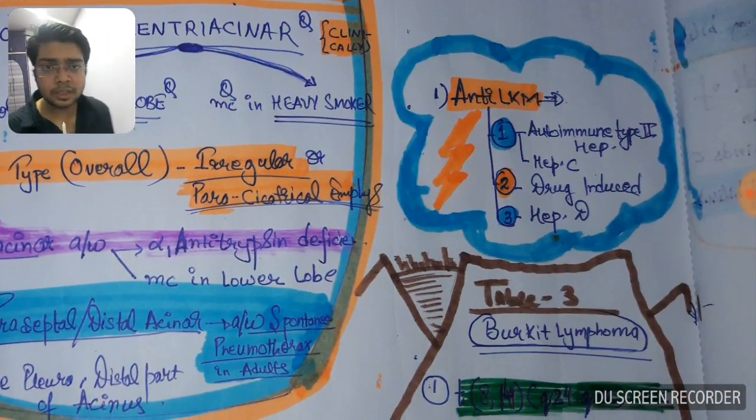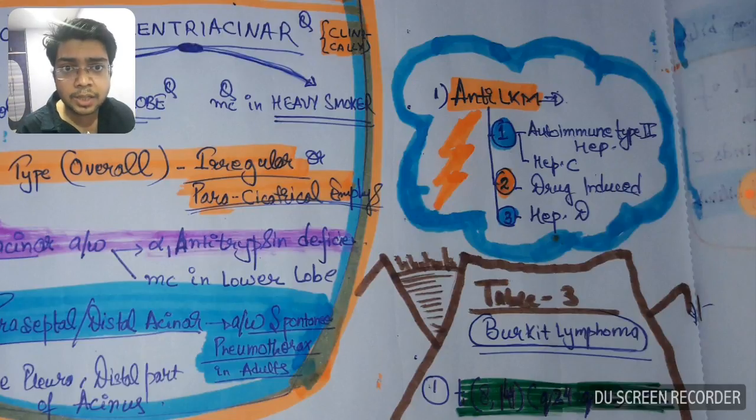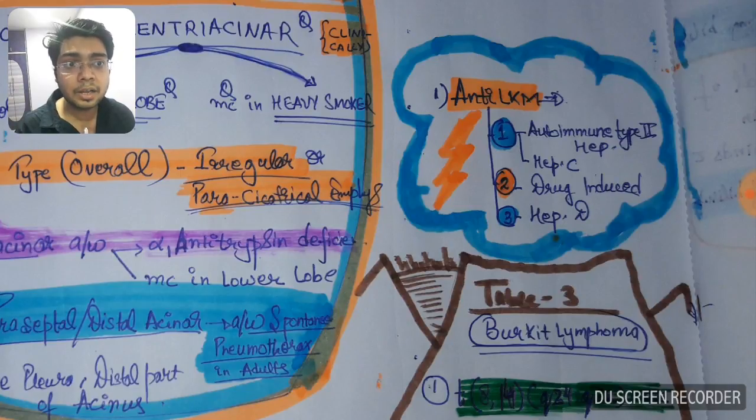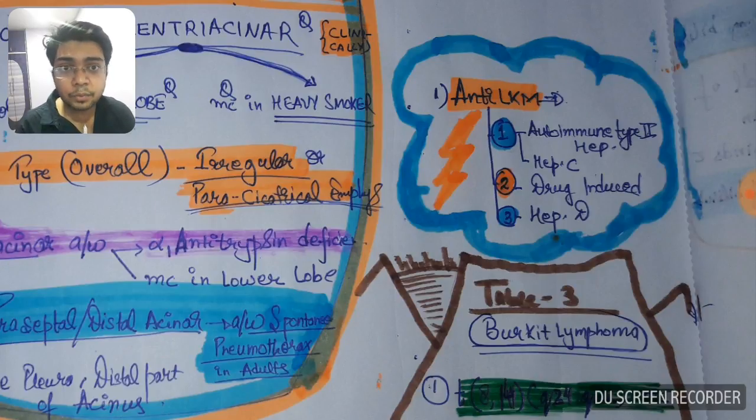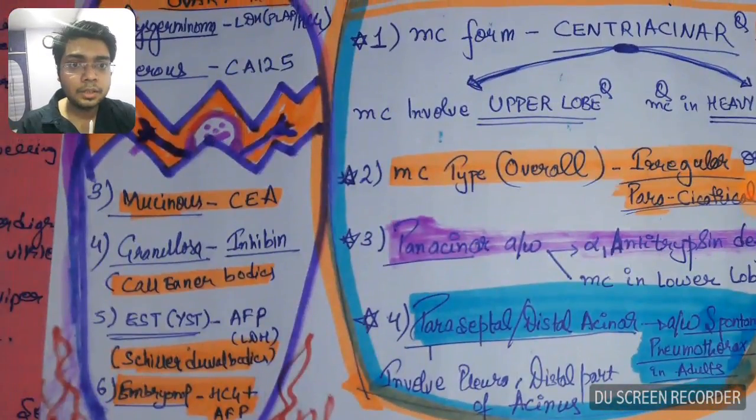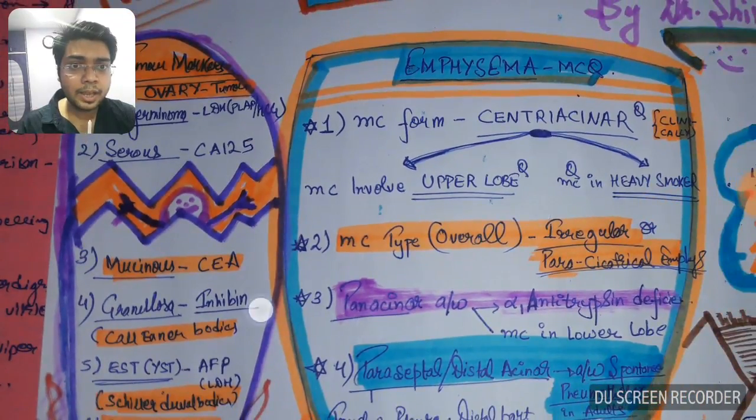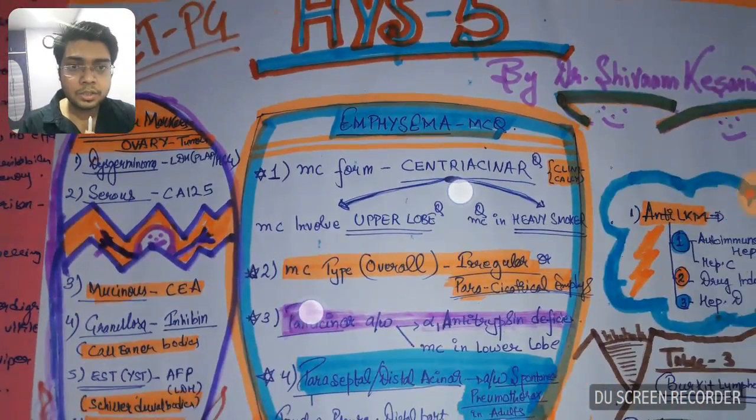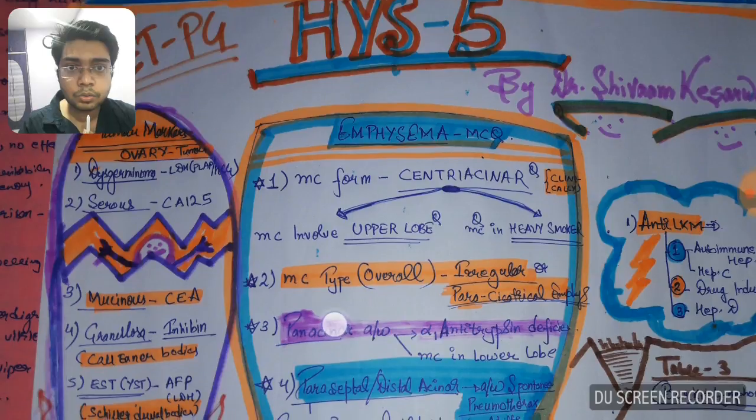These are three types: anti-LKM 1, 2, and 3. Out of which 2 is most frequently asked, which is associated with drug-induced hepatitis. 1 is associated with hepatitis C, again very important, and autoimmune type 2 hepatitis. 3 is associated with hepatitis D.